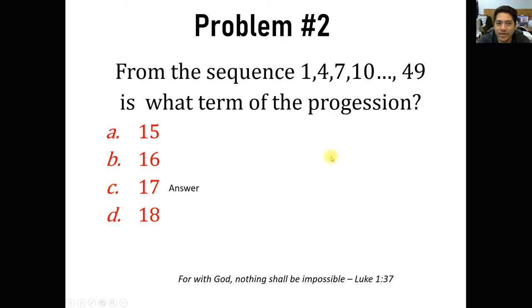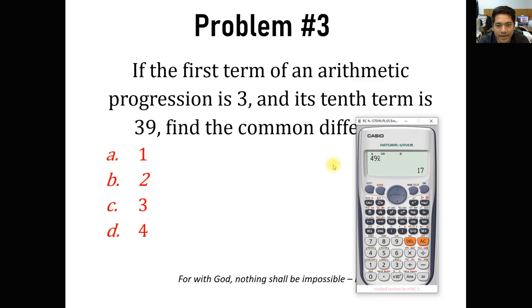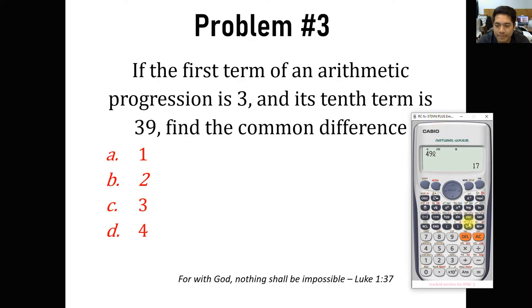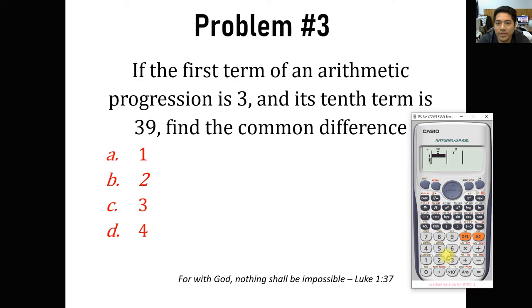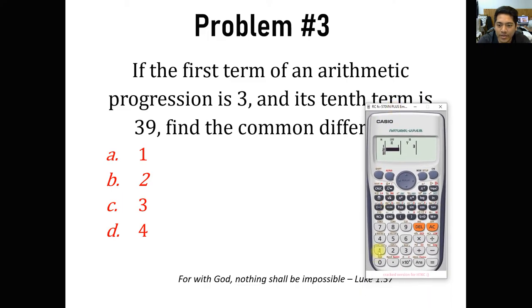Number 3: if the first term of an arithmetic progression is 3 and its 10th term is 39, find the common difference. This is easy using calculator techniques. Mode stat, a plus bx — number 2. Input the given: first term, x equals 1, y equals 3. The 10th term: x equals 10, y equals 39.